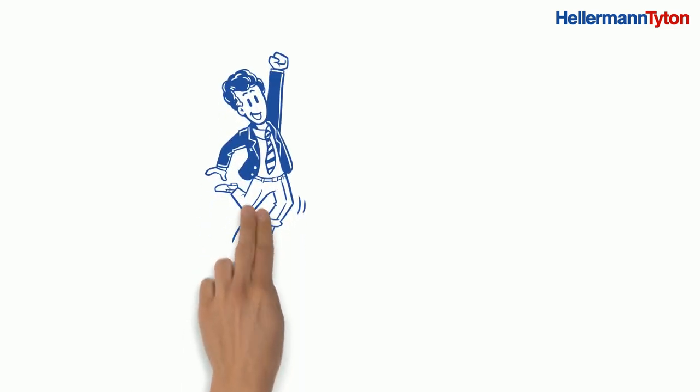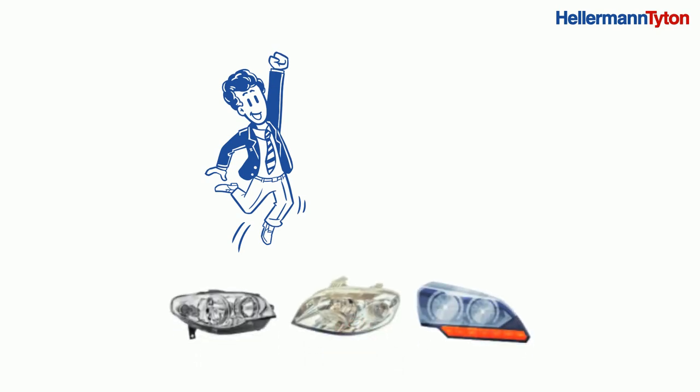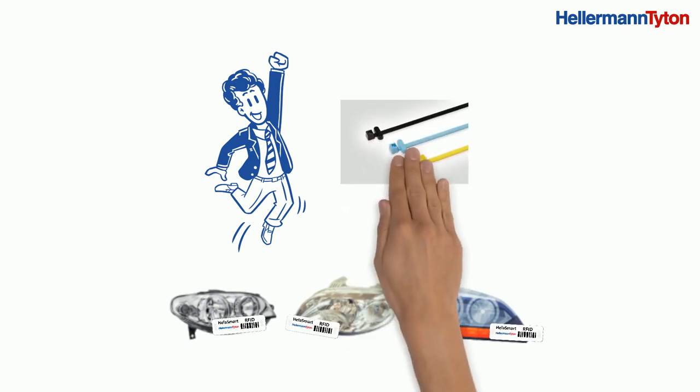Fortunately, Klaus discovered Hellermann-Tyton RFID transponders. These can be permanently or temporarily attached to a wide variety of components. For example, they can be in the form of a cable tie or an adhesive label.